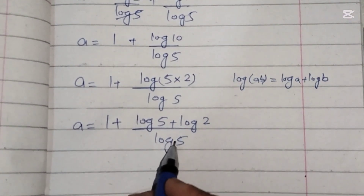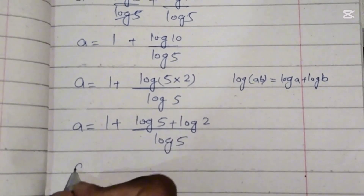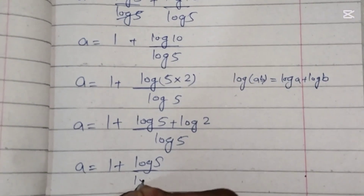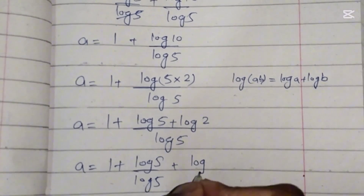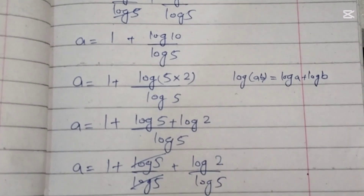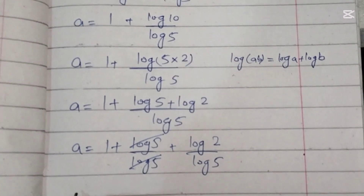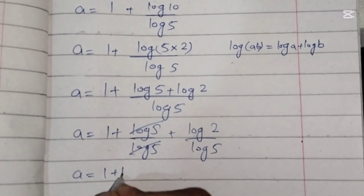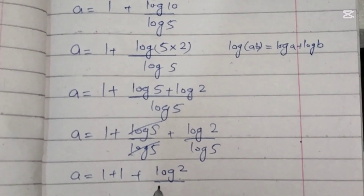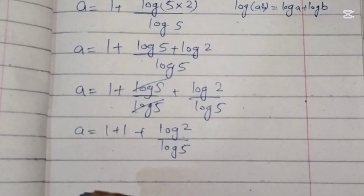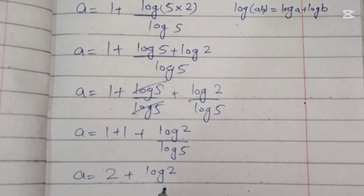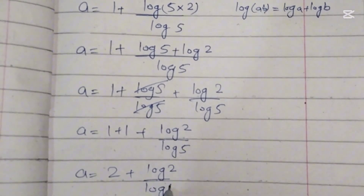Here we will divide log of 5 separately on both terms. A equals 1 plus log of 5 over log of 5 plus log of 2 over log of 5. Log of 5 cancels with log of 5. So a equals 1 plus 1 plus log of 2 over log of 5, which gives a equals 2 plus log of 2 over log of 5.